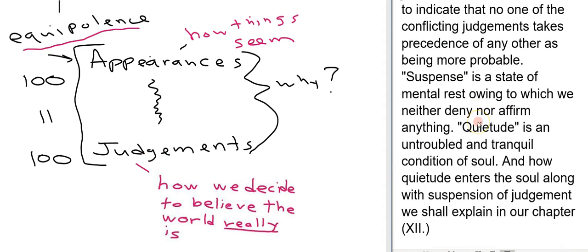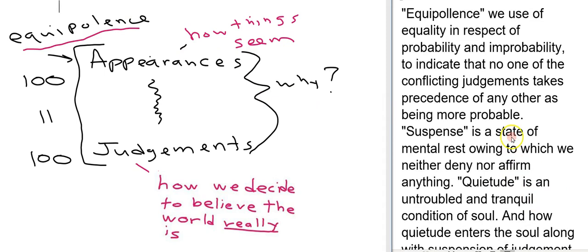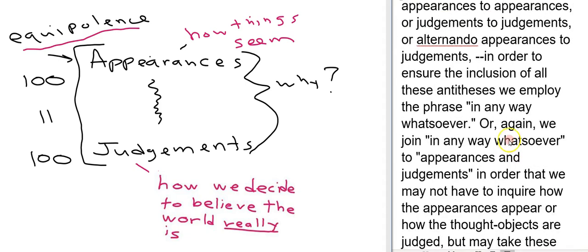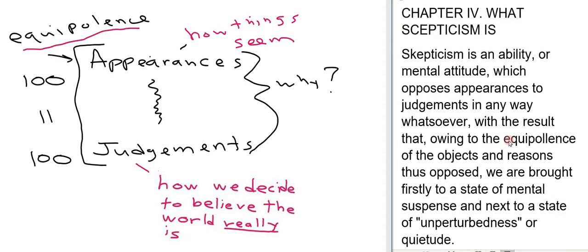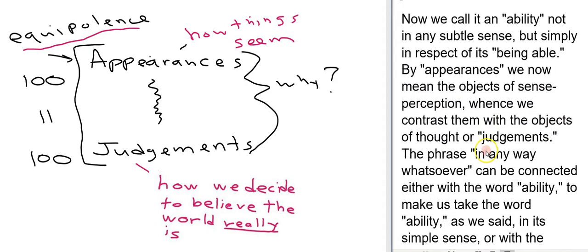Now back to this question then of why. Why are we doing this in the first place? We saw in the very first section here that Sextus wants to get us to first a state of mental suspense and then to a state of unperturbedness or quietude.